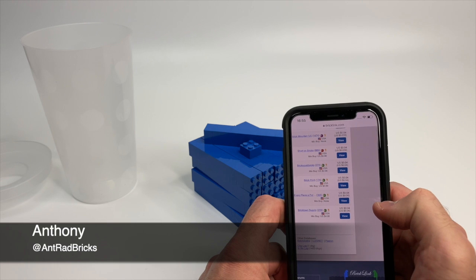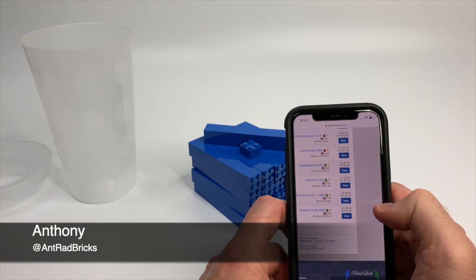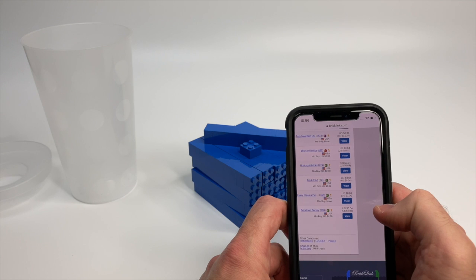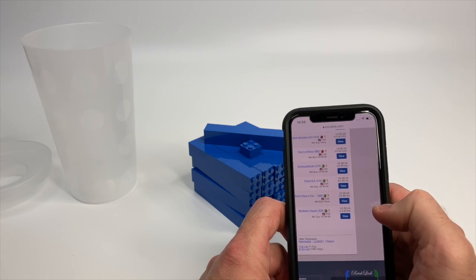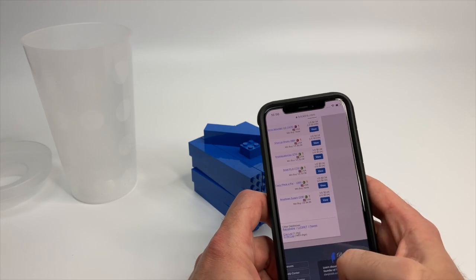Obviously it would have been better to just buy them on BrickLink at this point. Even with shipping, I doubt that shipping would have been more than $4 first class mail.